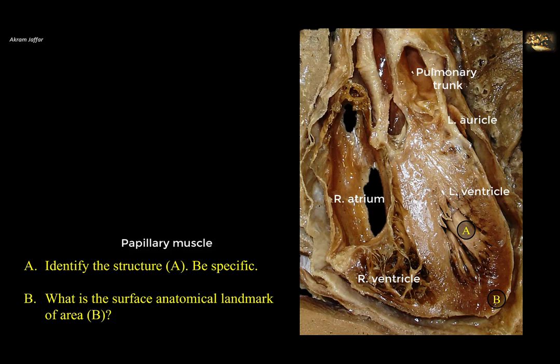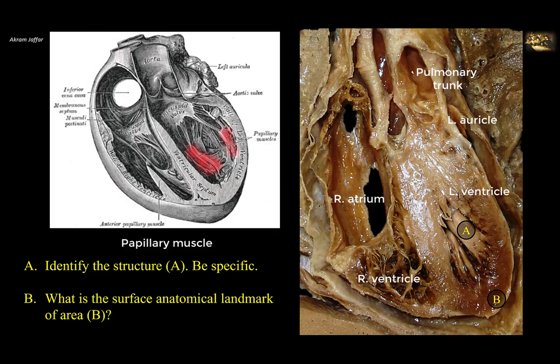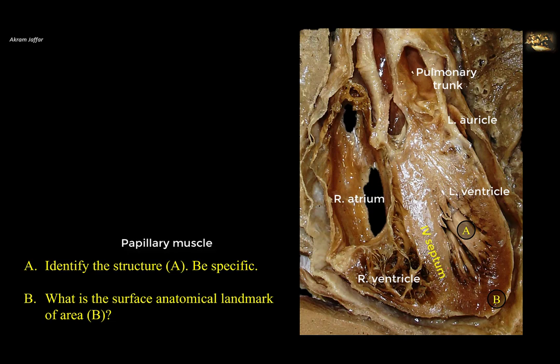In the left ventricle there are two papillary muscles: anterior and posterior. They project into the cavity of the ventricle. The anterior is connected to the interventricular septum and is also called the septal papillary muscle. The one labeled A is the posterior papillary muscle, which is more posterior. Remember that the left ventricle is anatomically located posterior to the right ventricle, and not only to the left.